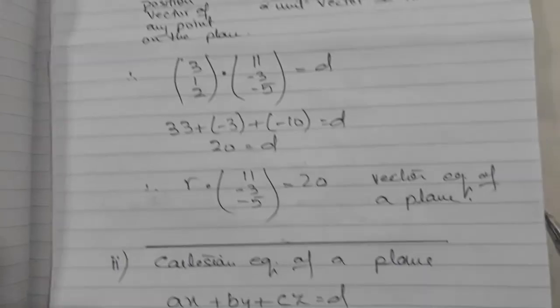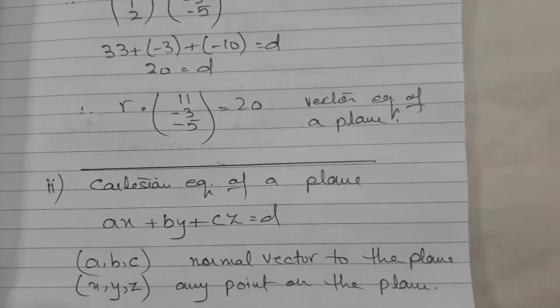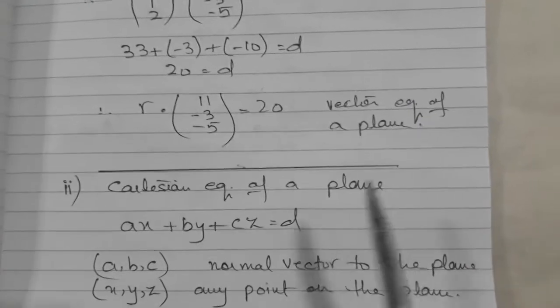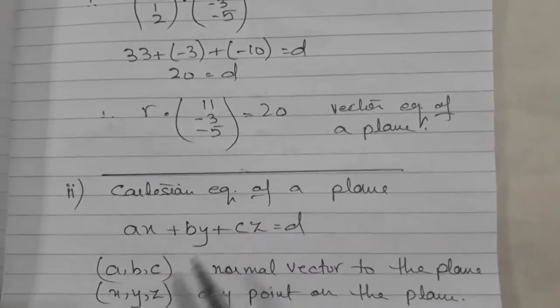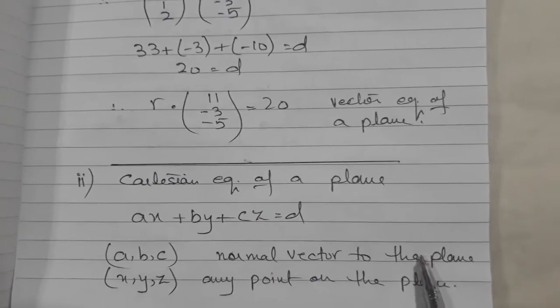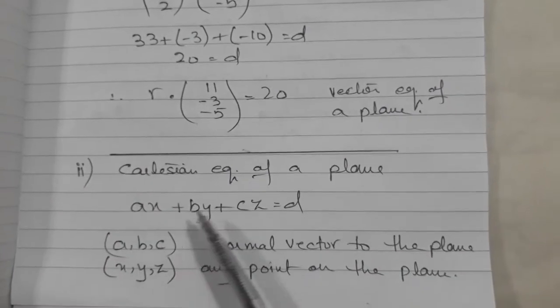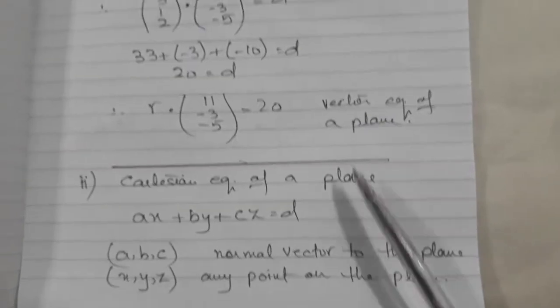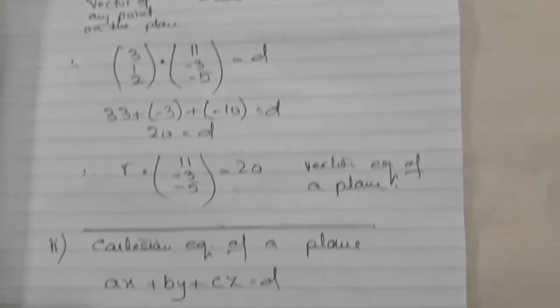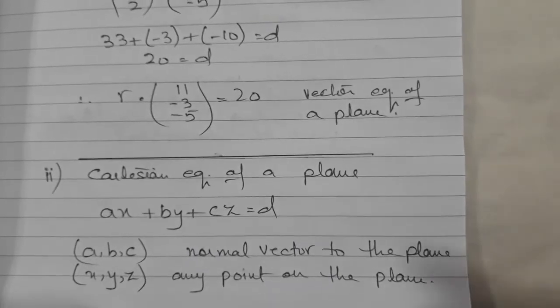So now let's see Cartesian equation of a plane, which is this form. In this form, a, b, c are the normal vector to the plane, which were represented by n in this case. And now, x, y, z are any point on the plane, which was represented by r here. So this is the Cartesian equation of a plane and that was the vector equation of the plane.